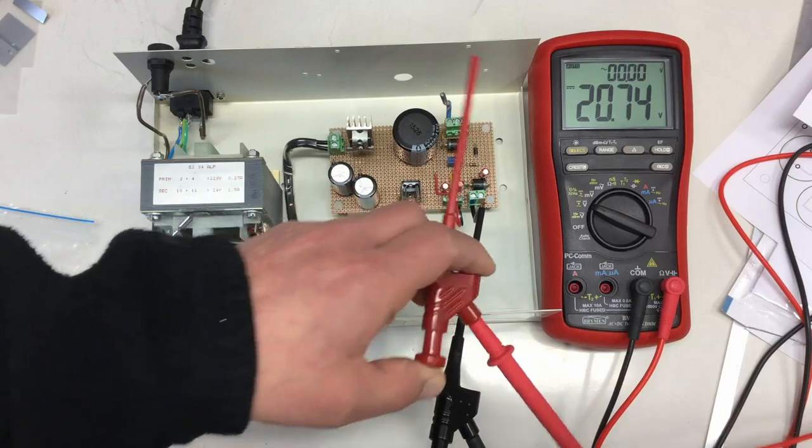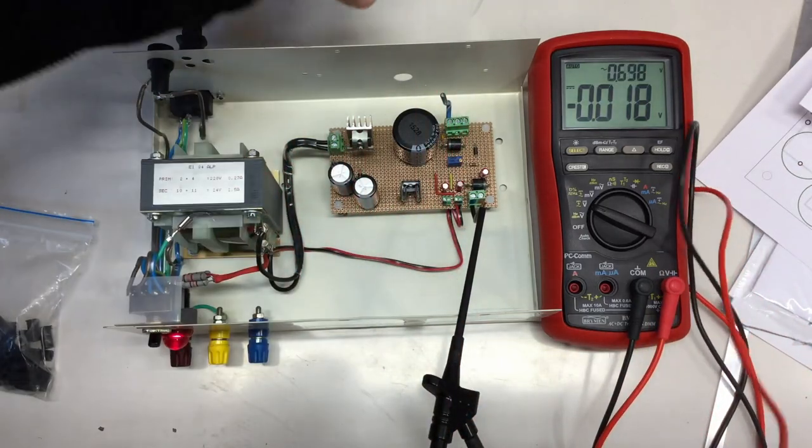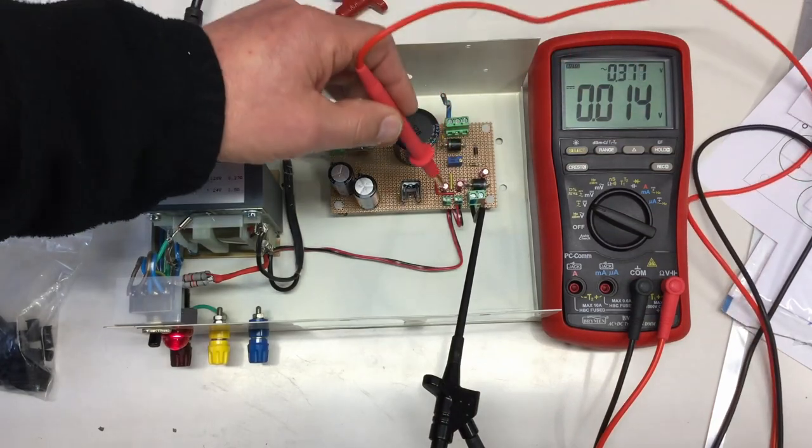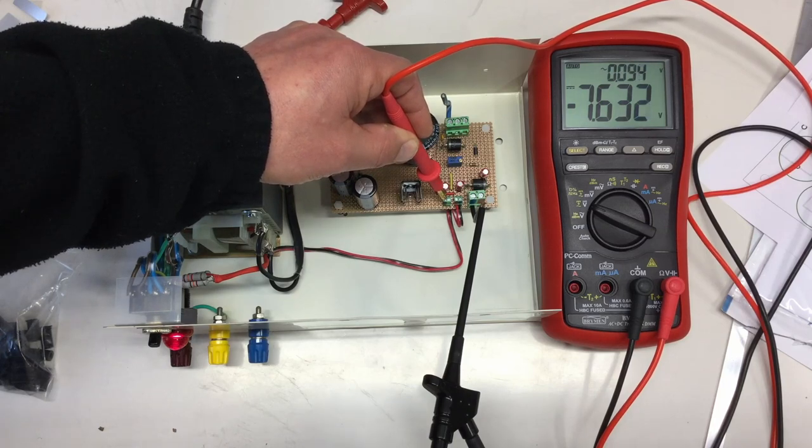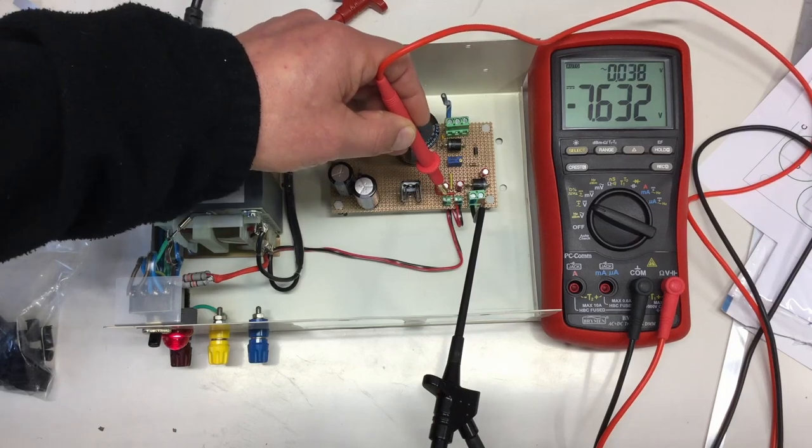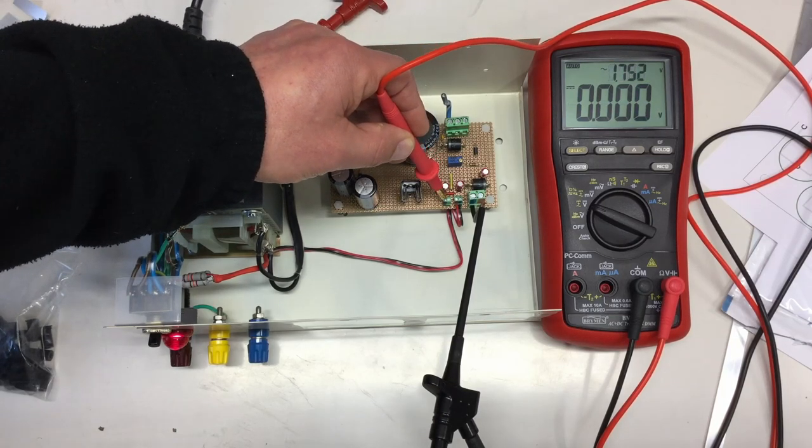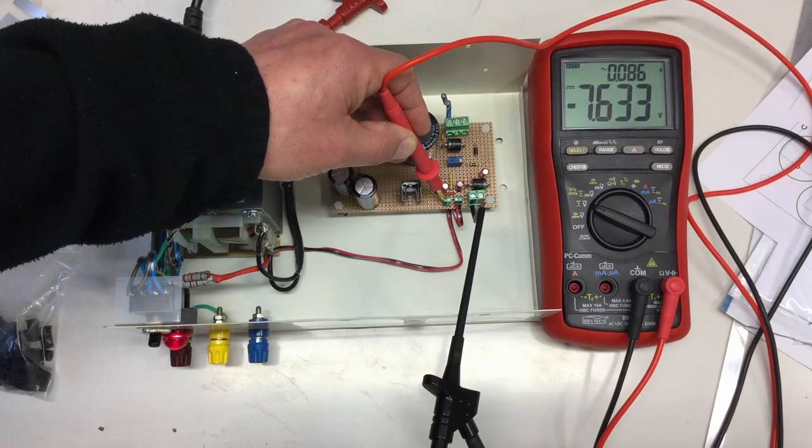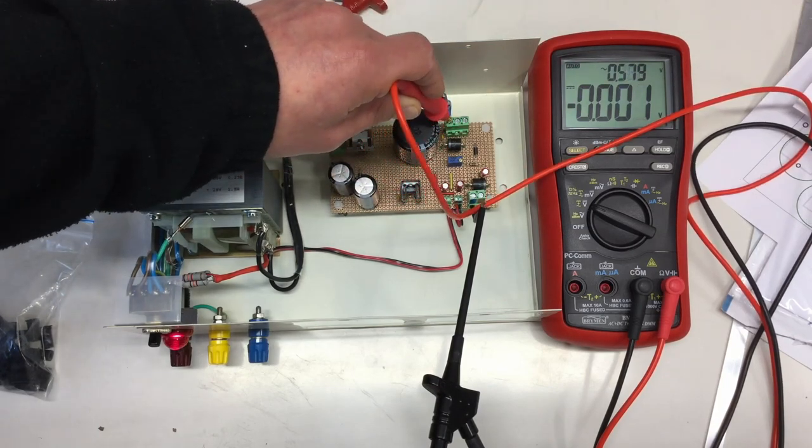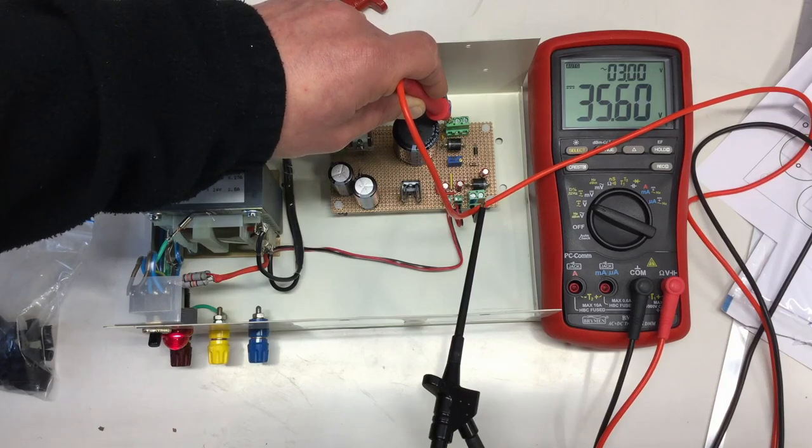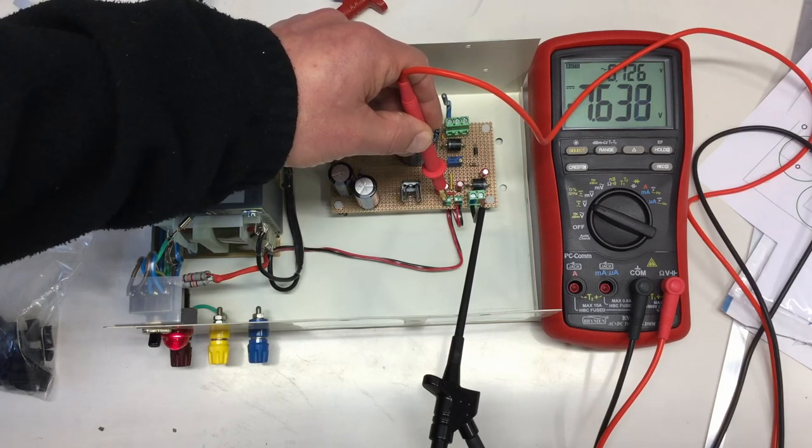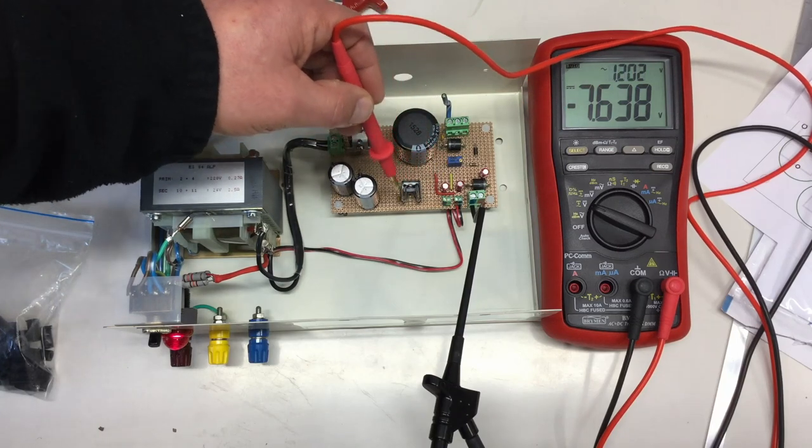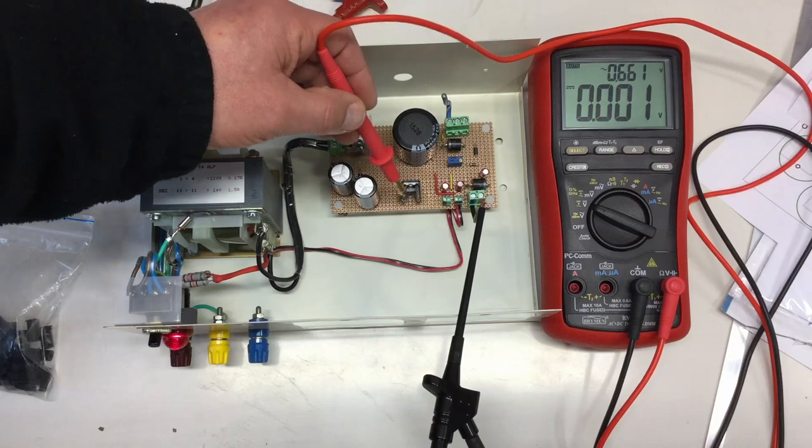Now we can probe around a little bit. For example, this pin here should be the negative voltage. And it says minus 7.6 volts. That might be okay because I'm currently having absolutely no load on that LM337 negative voltage regulator.